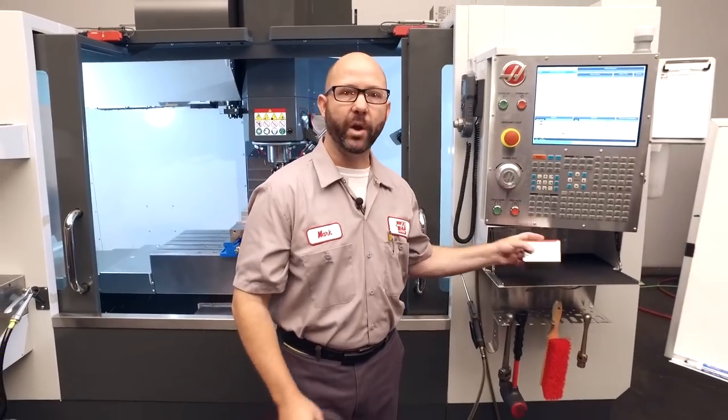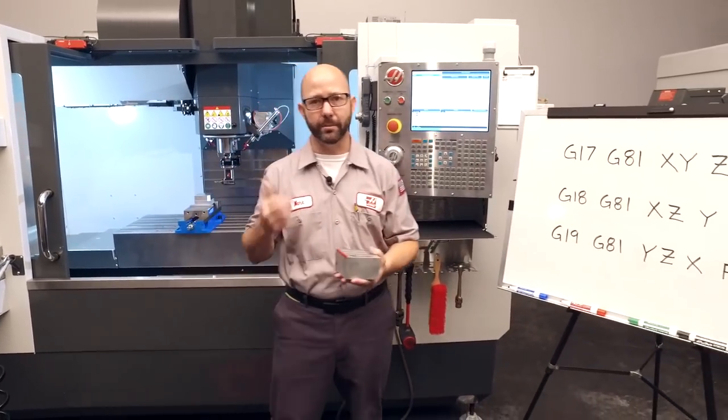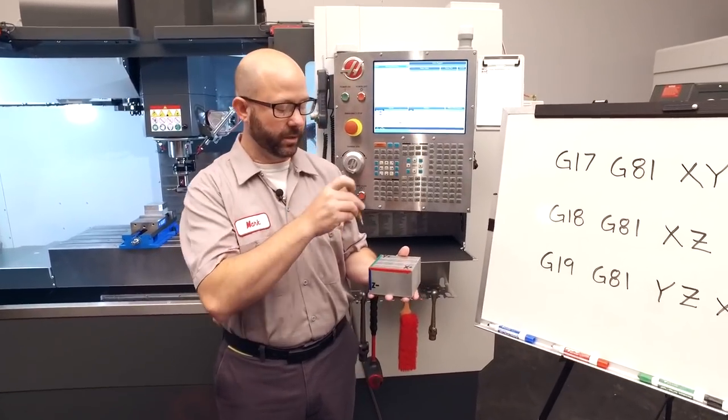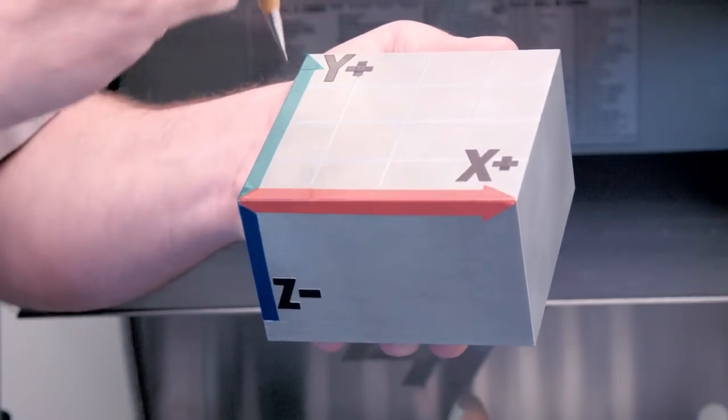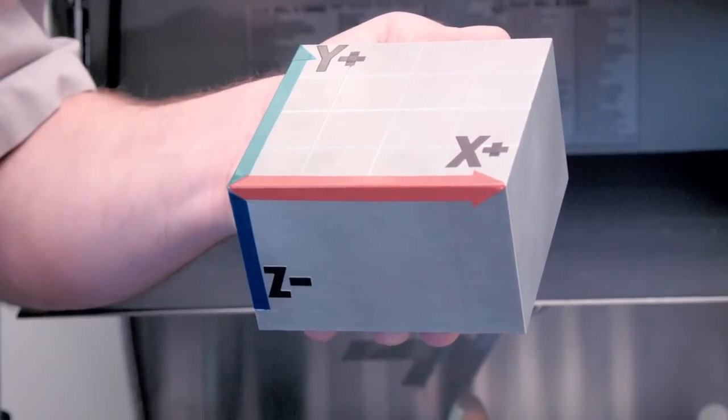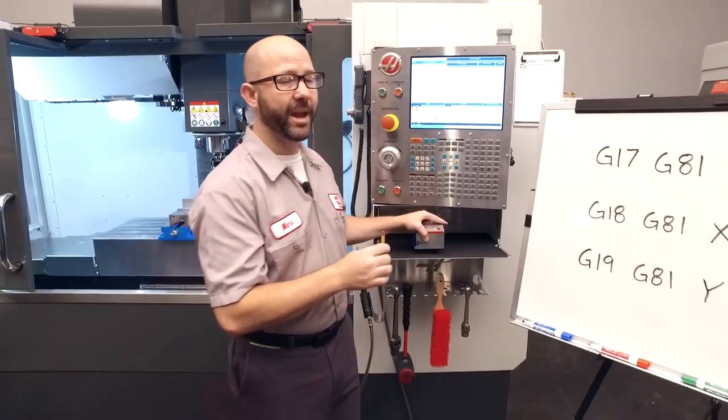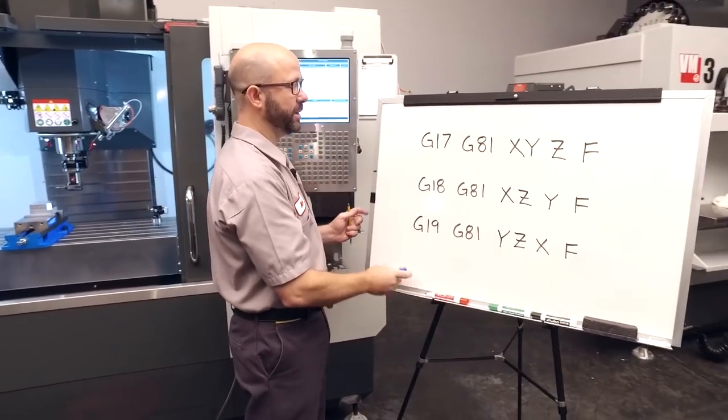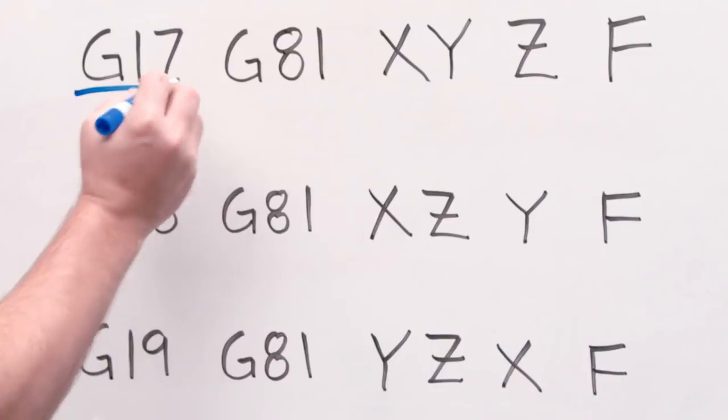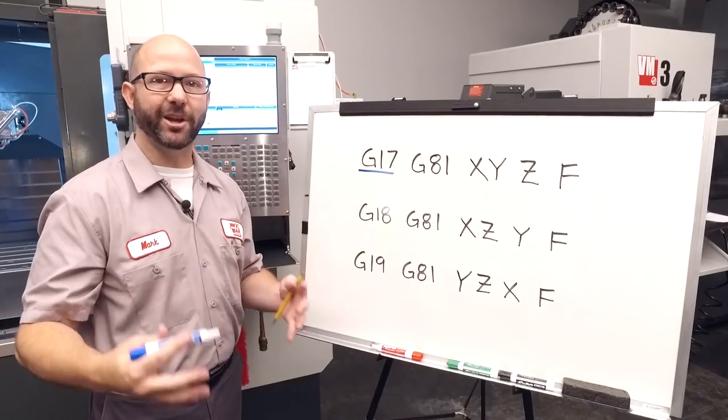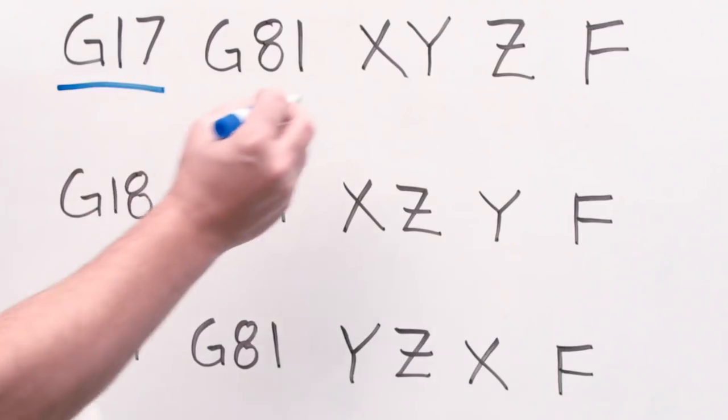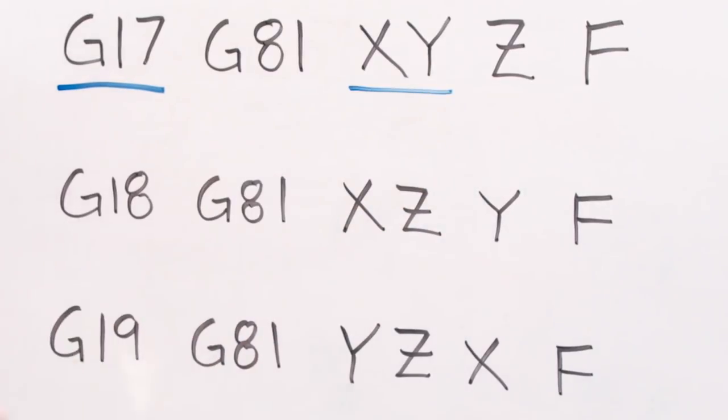Now typically when I want to drill a hole on a mill, I'm going to position along the X and Y axis and drill to a Z depth. Now when I do that, I'm actually using the G17 plane. When we turn our machine on in the morning, it starts up in G17. Position the X and Y, drill to a Z depth.